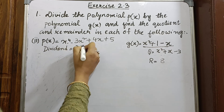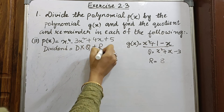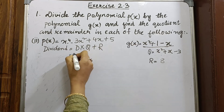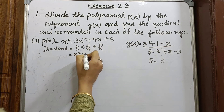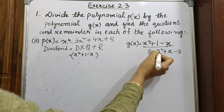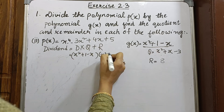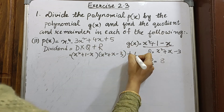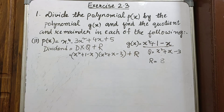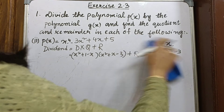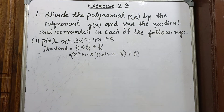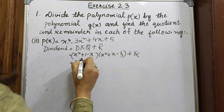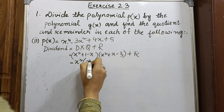Now we verify: dividend equals divisor into quotient plus remainder. The divisor is x² minus x plus 1, the quotient is x² plus x minus 3, plus remainder 8.